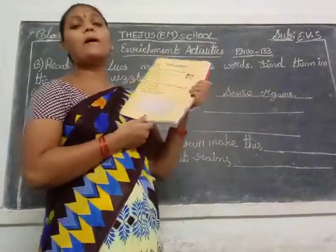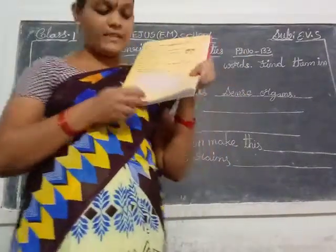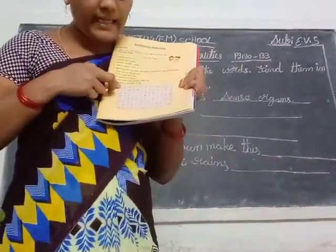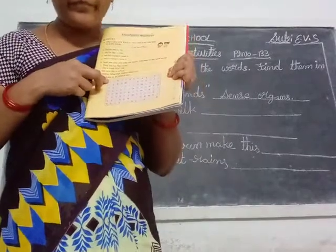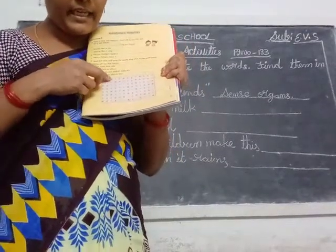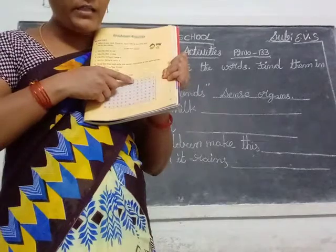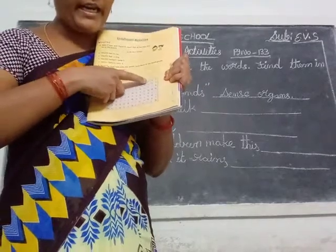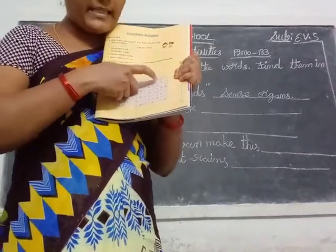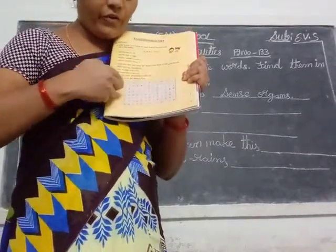And in the word puzzle, you circle that word. The first word is there — E-N-S-E-O-R-G-A-N-S. You round that word.